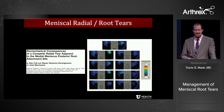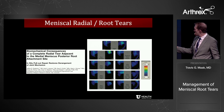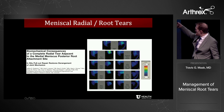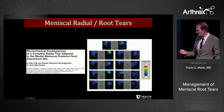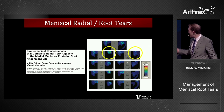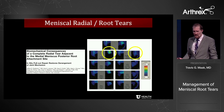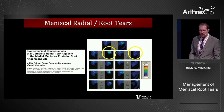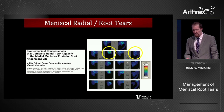Previous studies have looked at the consequences of these root tears. If you look at the pressure distribution in a root avulsion, you can see a complete pressure increase in that specific area, as opposed to an anatomic root repair, which demonstrates an almost complete reduction and elimination of the pressure distribution back to a normal anatomic state.